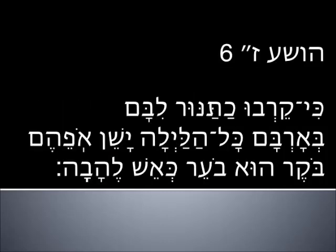Let's go back to Hosea 7:6. They're preparing their heart like an oven — readying it, the same way you might ready a sacrifice. They're lying in ambush. The baker is sleeping all night, and in the morning here comes the flaming fire. It's like he slept on it all night, had a bad thought, was dreaming about it. In the morning, the thought is going to come to fruition. It will not be righteous.